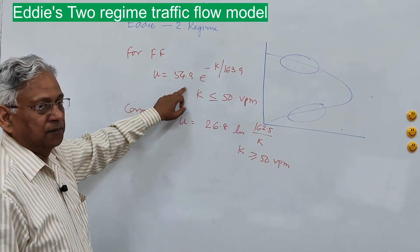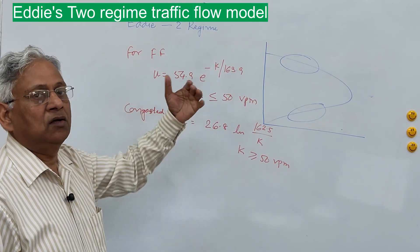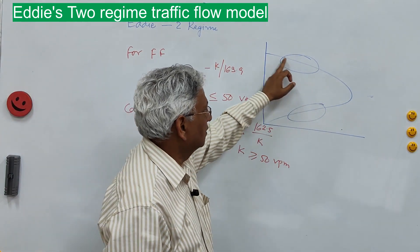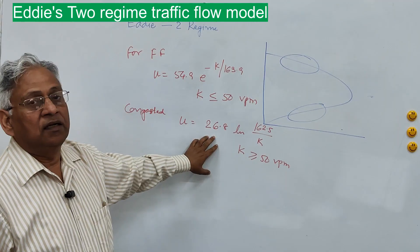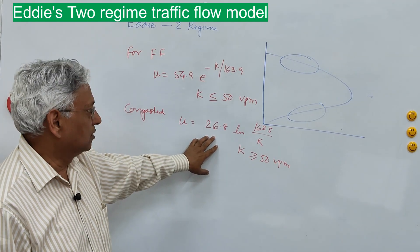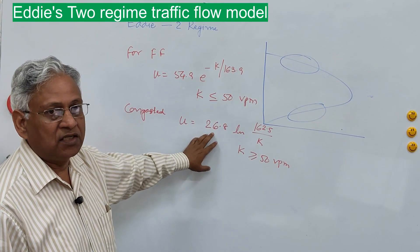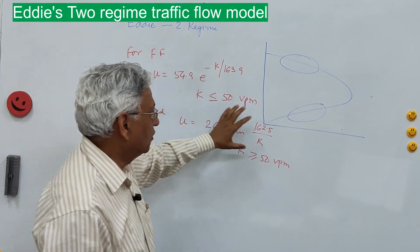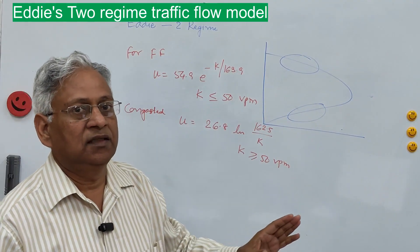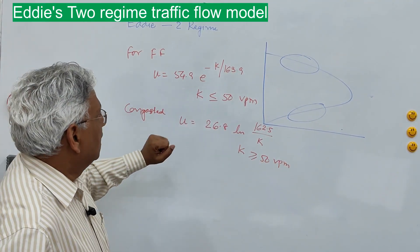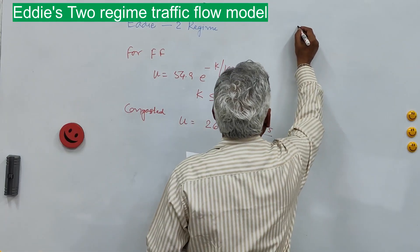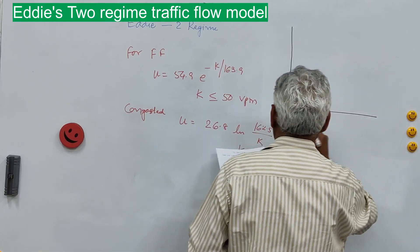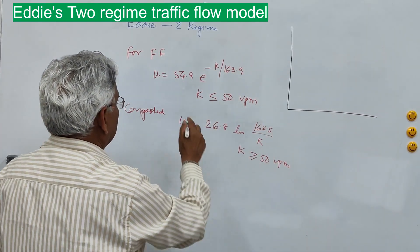The Underwood model is not applicable for high traffic densities, so it is used for the uncongested part of the curve. The Greenberg logarithmic model is not suitable for light traffic conditions, so Edie suggested the Greenberg model for the congested part of the curve. This is the two-regime model.